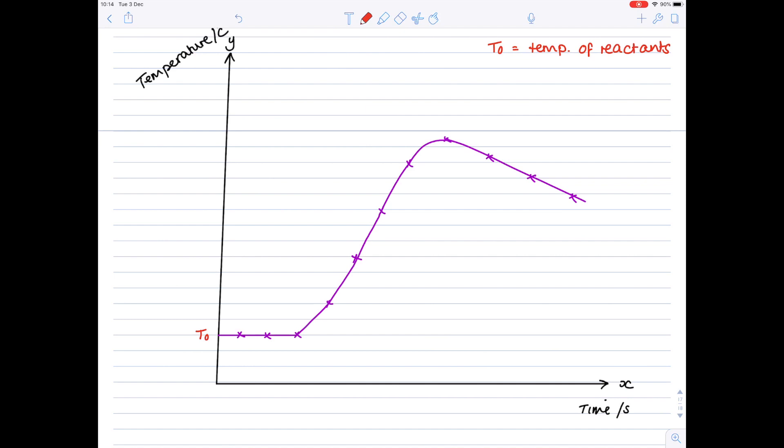So I've already told you that T0 is the temperature of the reactants. While T1 is the highest temperature actually reached within the reaction. And as you can see from the graph line, that is indeed the highest temperature.